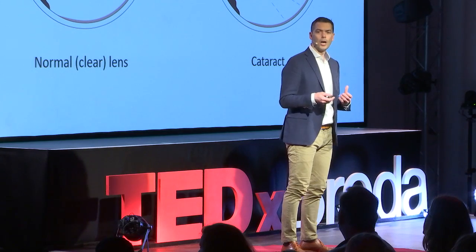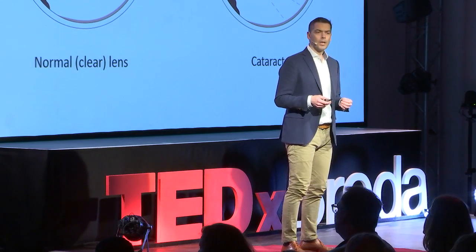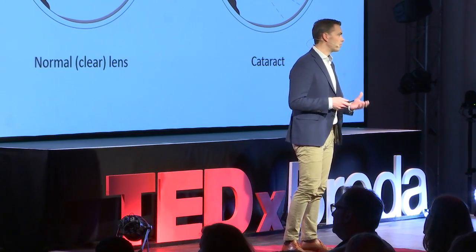In the eye, there is a lens. The lens focuses the light on your retina, which allows you to see the world very clearly. Over time, the lens becomes opacified, and this is called cataract. This limits the light to be focused well on the retina, and that causes blurring of your vision.